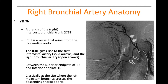Classically, the intercostal bronchial trunk comes off where the left main stem bronchus crosses the descending thoracic aorta. This is important to know because these vessels can be difficult to find, and knowing these landmarks helps you get to the right area. So if you're looking for the intercostal bronchial trunk — giving rise to the first intercostal artery and right bronchial artery — look between the superior end plate of T5 and inferior end plate of T6, where the left main stem bronchus crosses the descending thoracic aorta.